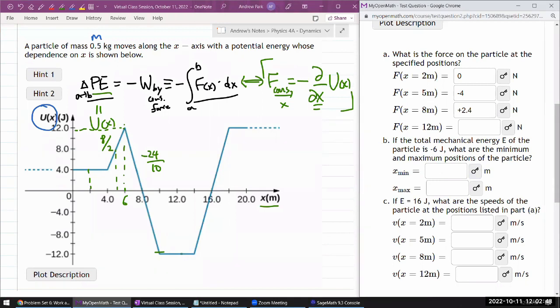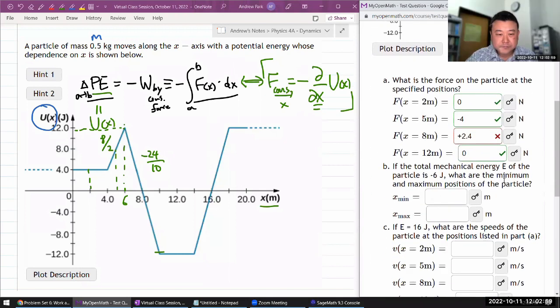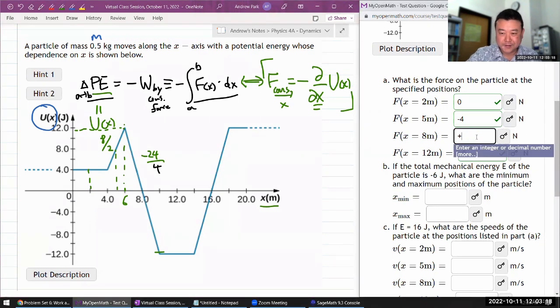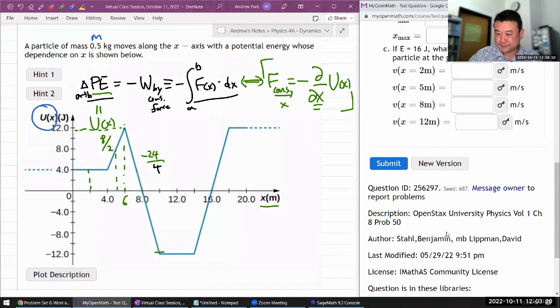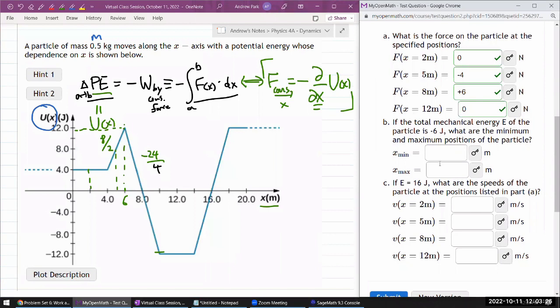And at x equals 12, it's zero again because it's flat. Let's make sure I got this right because it involves a little bit of eyeballing. Sometimes the question is a bit strict. That was 10, 6 to 10. Oh I'm sorry, no that's fine. 6 to 10 is not 10, it's the run of 4, so this is going to be plus 6. So those are the forces and I think it makes sense.